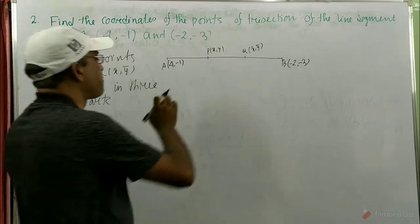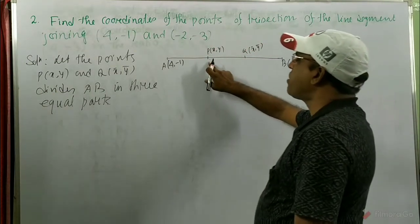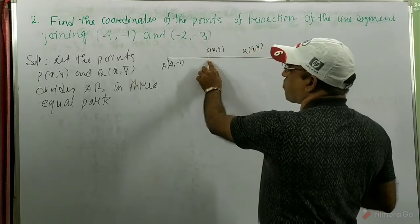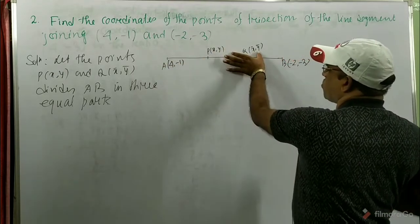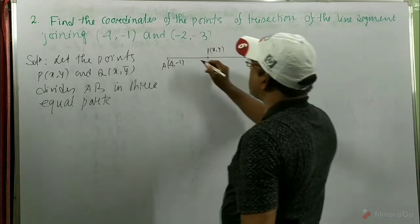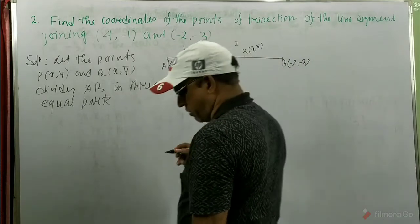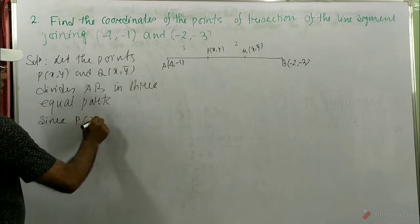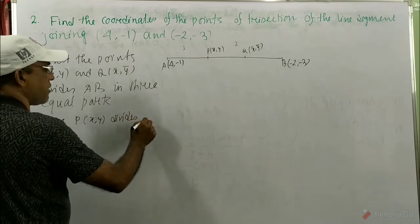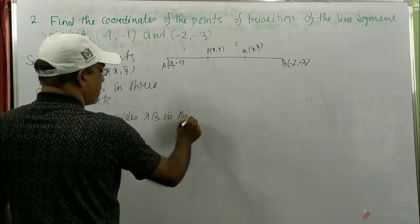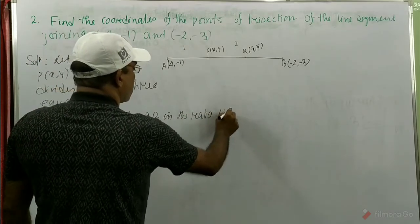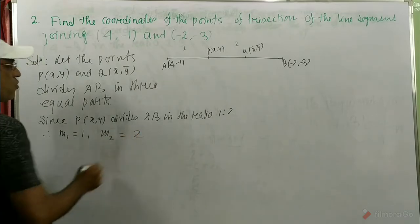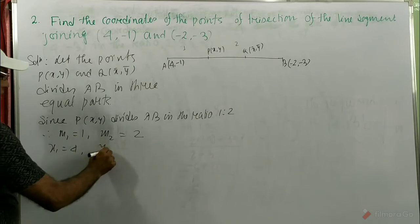First we want to find point P, next we find Q. When we consider this point P, their measurements are same — these lengths are equal. So when we consider point P, it divides this line segment in the ratio 1 is to 2. That means this part is 1 and this is 2. So P(x, y) divides AB in the ratio 1 is to 2. Therefore, m1 = 1, m2 = 2, and x1 = 4, y1 = -1.